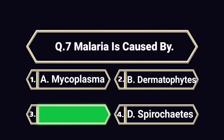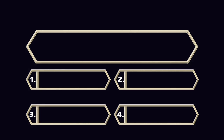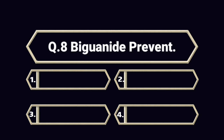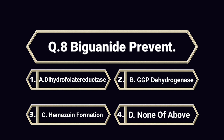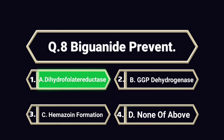Question number 8. Biguanide prevents. A. Dihydrofolate reductase. B. G6PD dehydrogenase. C. Hemozoin formation. D. None of the above. Answer is A. Dihydrofolate reductase.